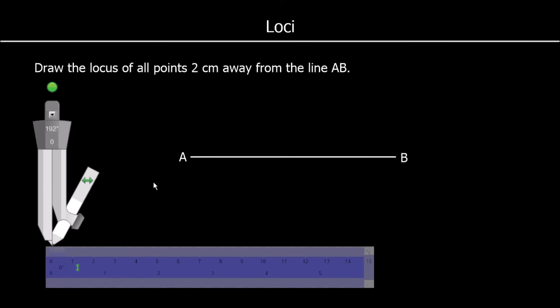So we're going to have a semi-circle around A, all of the points 2 cm away from A. A semi-circle at B, with all of the points 2 cm away from B. And straight lines in the middle.